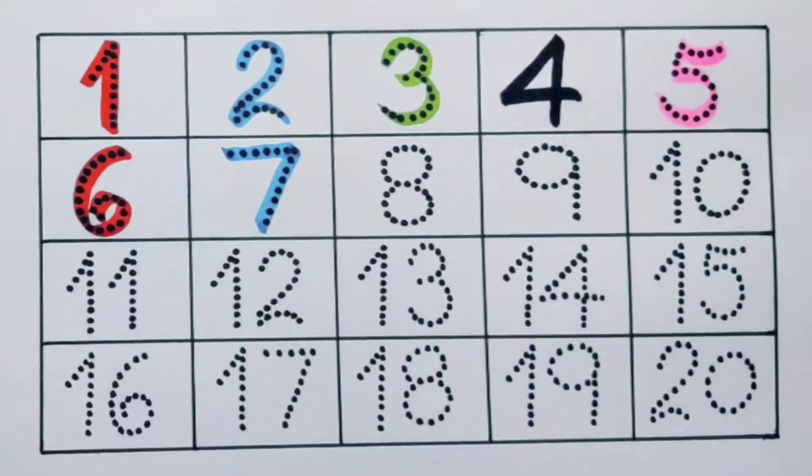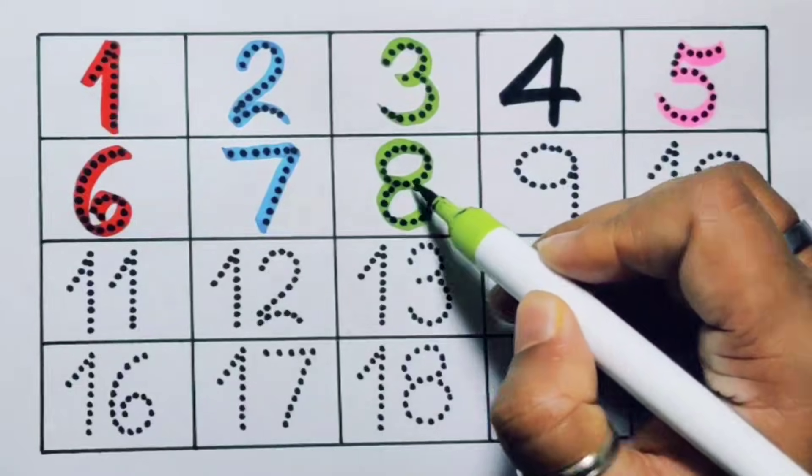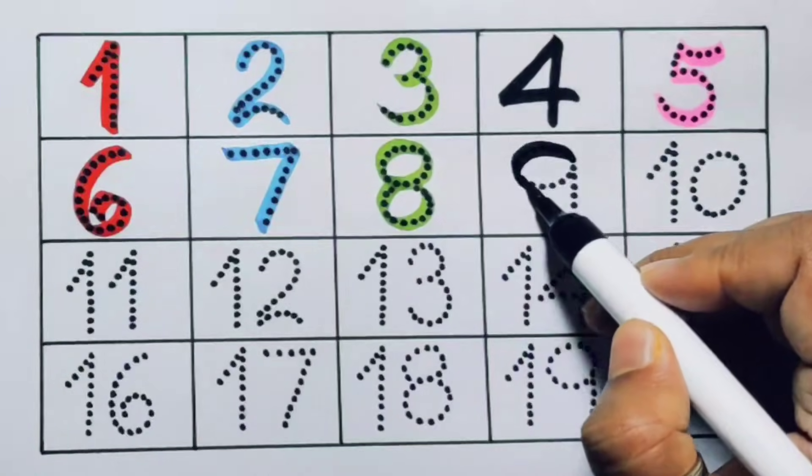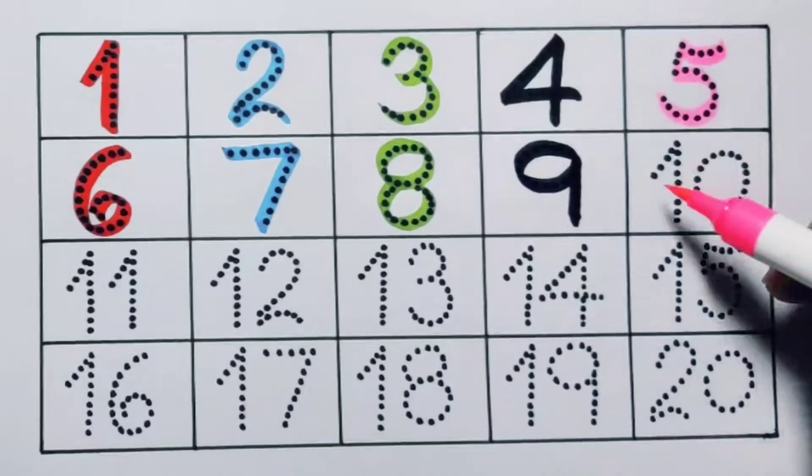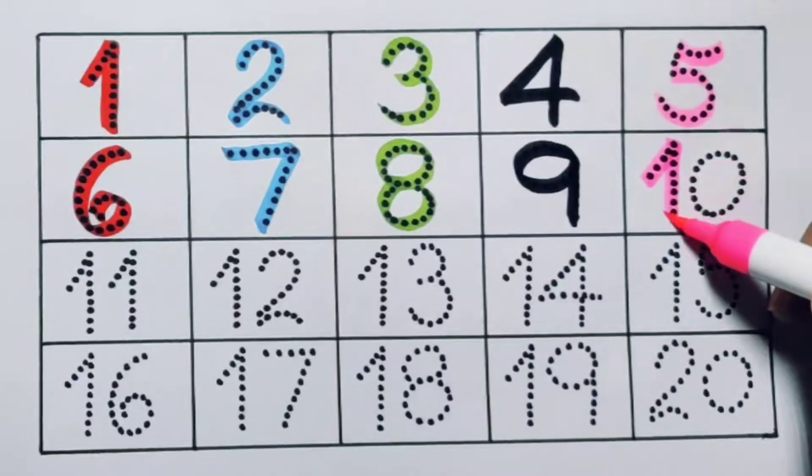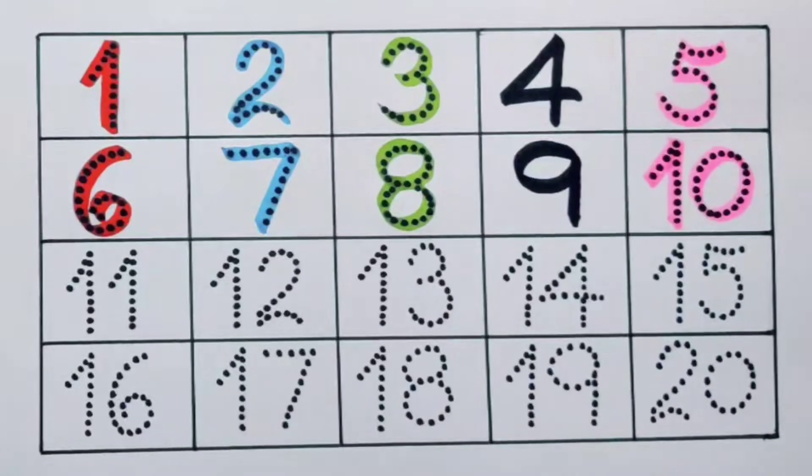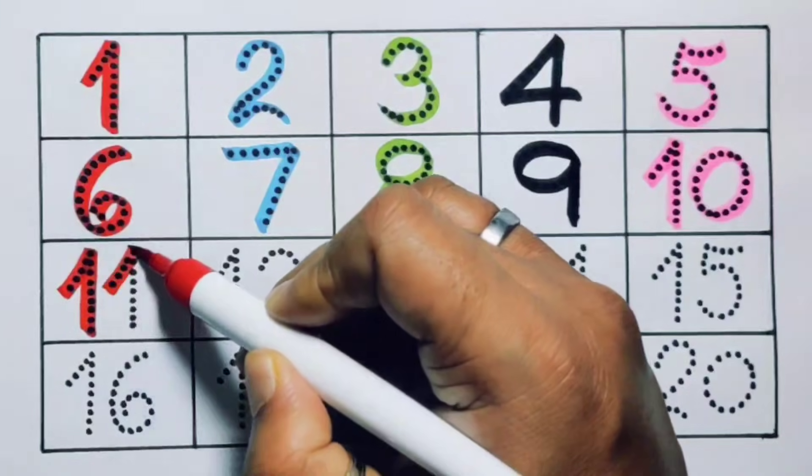Next, eight, number eight. Next, nine, number nine. Next kids, ten, one zero, ten, number ten. Next kids, eleven, one one, eleven, number eleven.